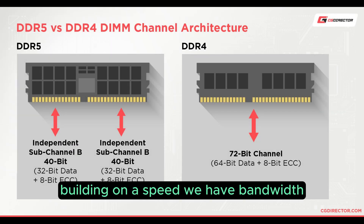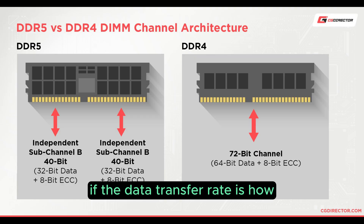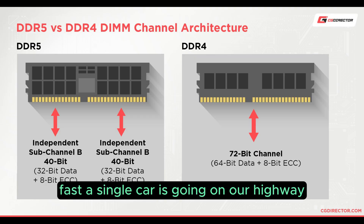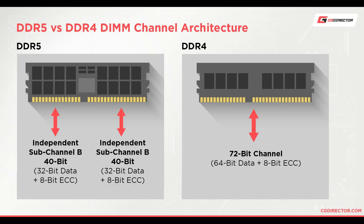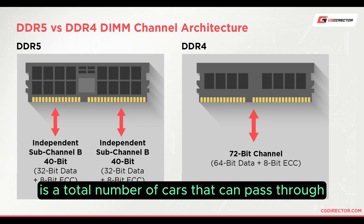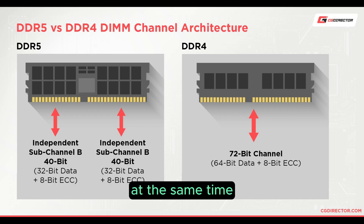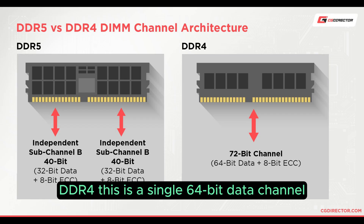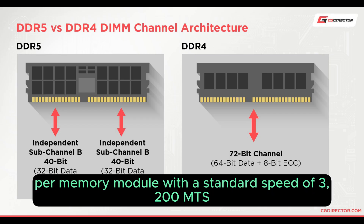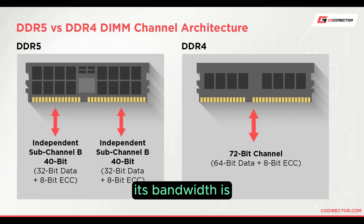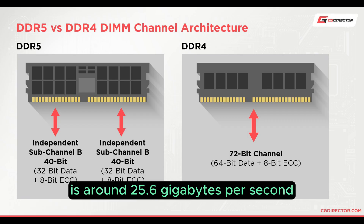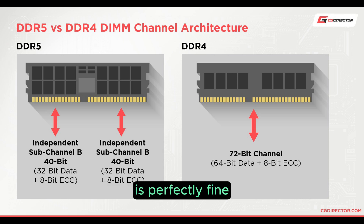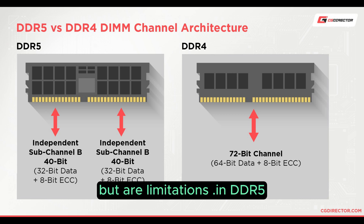Building on speed, we can think of it this way: if the data transfer rate is how fast a single car is going on a highway, bandwidth is the total number of cars that can pass through at the same time. DDR4 uses a single 64-bit data channel per memory module with a standard speed of 3200 MT/s, giving it a bandwidth of around 25.6 GB per second. It's perfectly fine, but there are limitations.